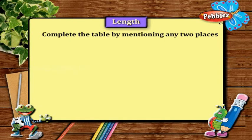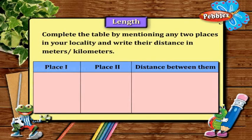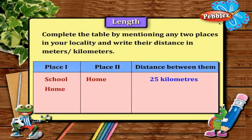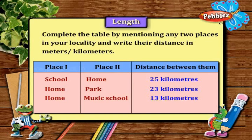Complete the table by mentioning any two places in your locality and write their distance in meters or kilometers. Place 1: school, Place 2: home — distance between them: 25 km. Place 1: home, Place 2: park — distance between them: 23 km. Place 1: home, Place 2: music school — distance between them: 13 km. Place 1: home, Place 2: hotel — distance between them: 30 km.